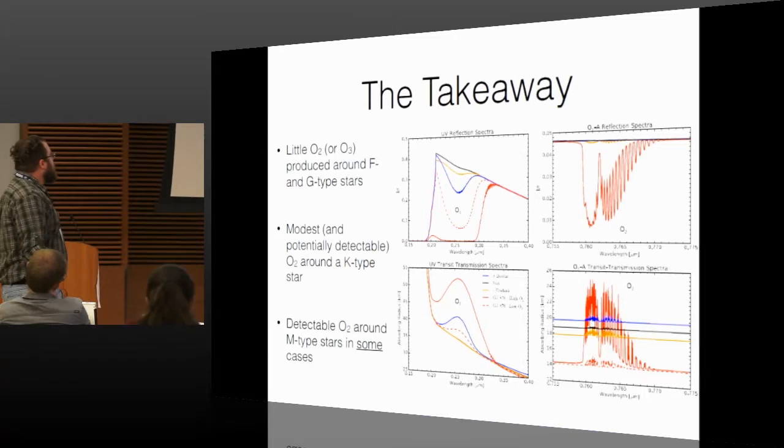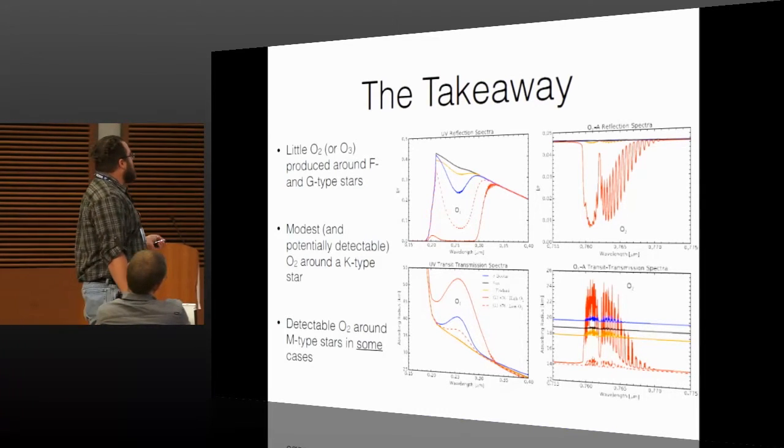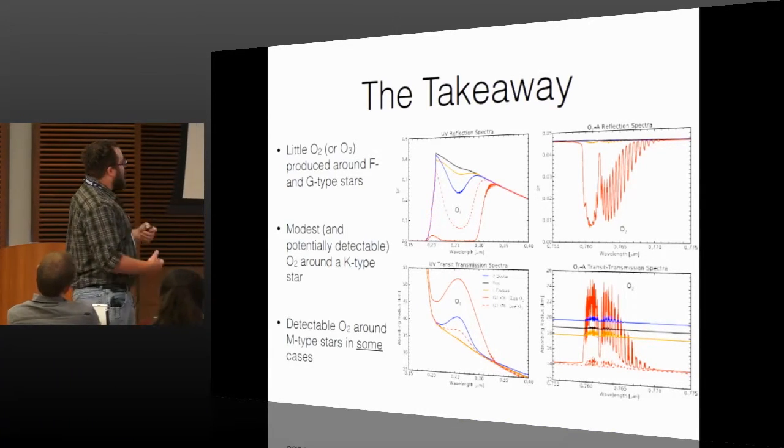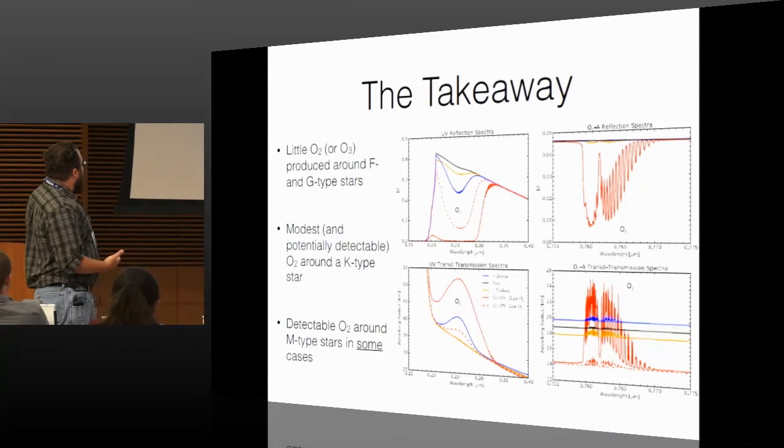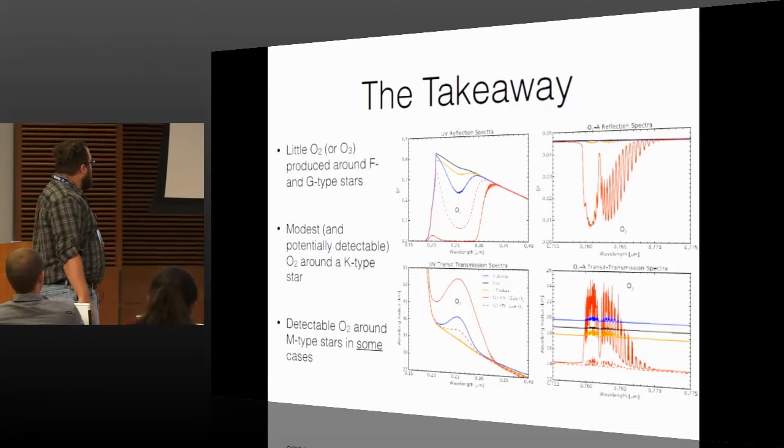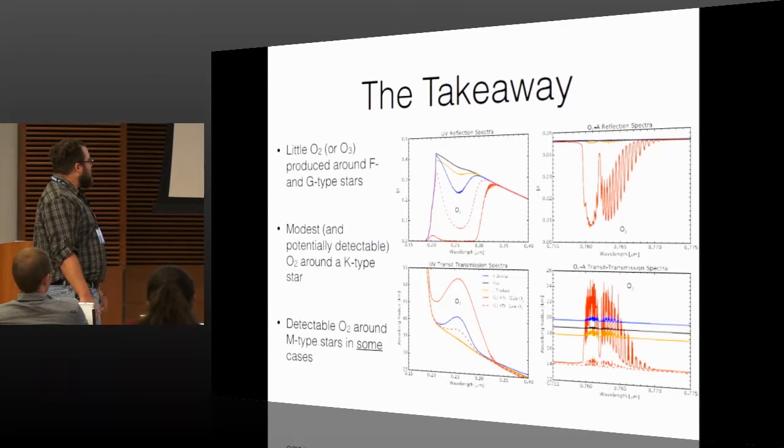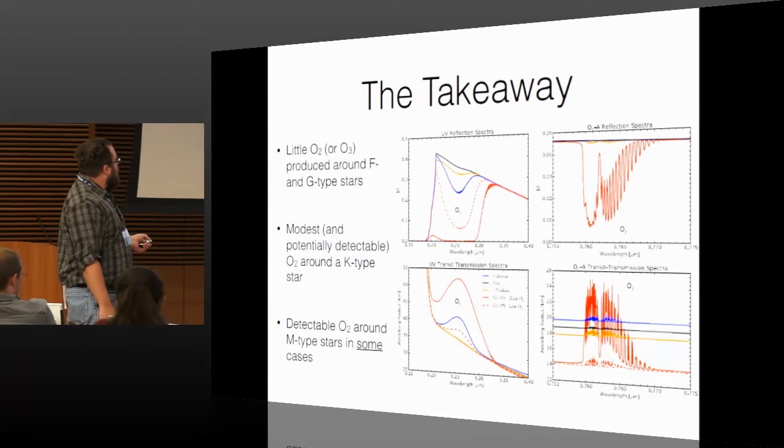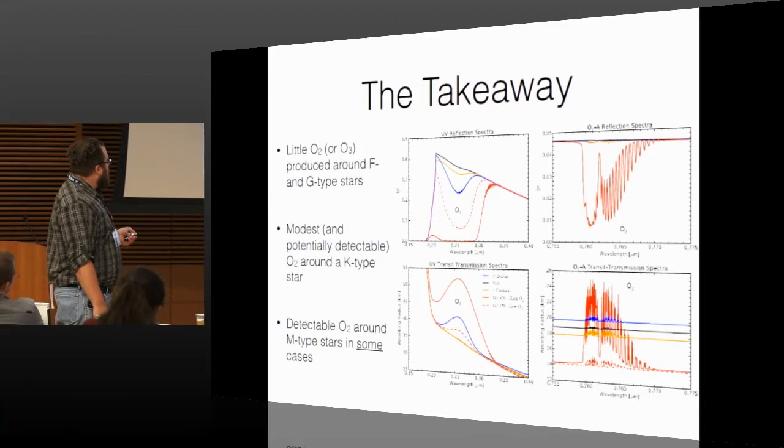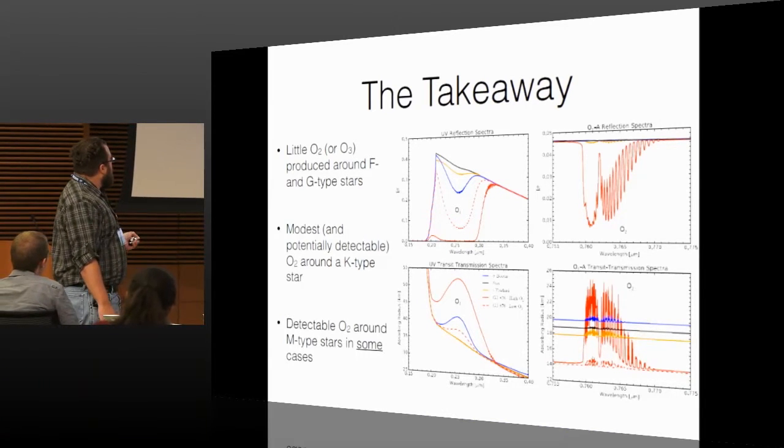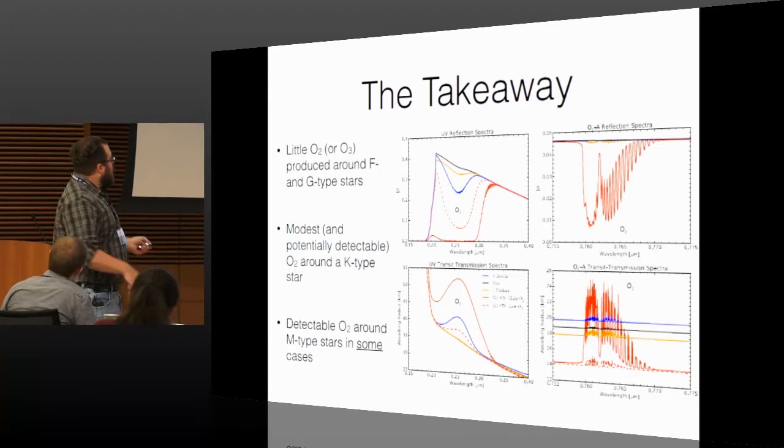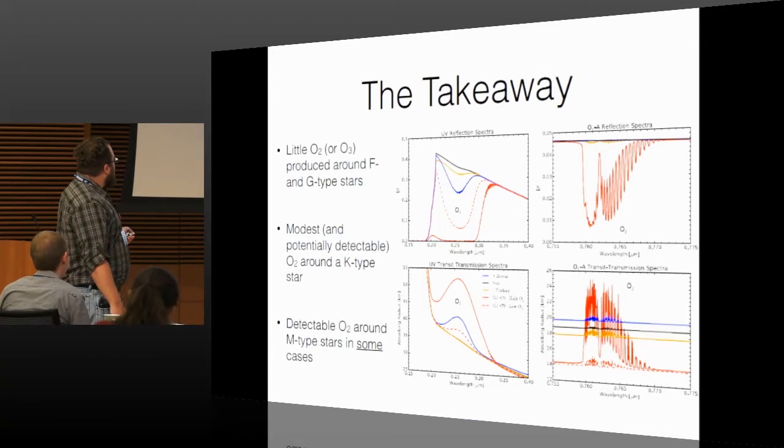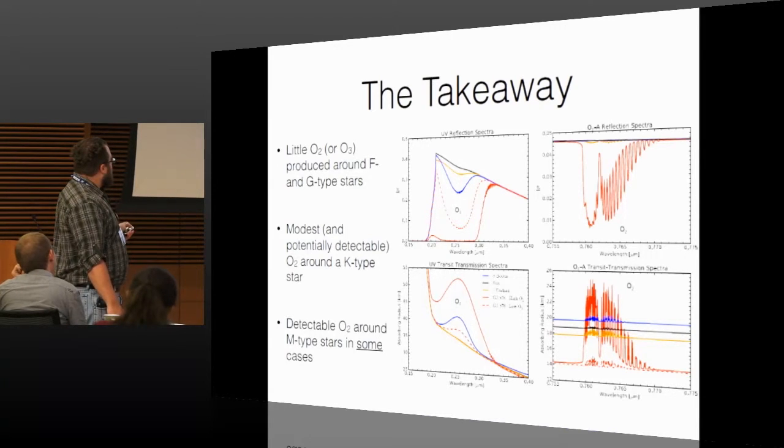And so, in conclusion, I'd like to suggest that there is little O2 or ozone around F and G-type stars, that there's a modest and potentially detectable amount of O2 around K-type stars, and detectable O2 around M-stars in some cases, e.g., if there are no surface sinks for O2. And this is a lovely suite of spectra that Eddie Schwederman has put together from UW. So, not this UW, the other UW. And you can see that, for example, that ozone feature in the UV is pretty strong for the M-star, and that oxygen feature at 0.76 microns is pretty strong, too.